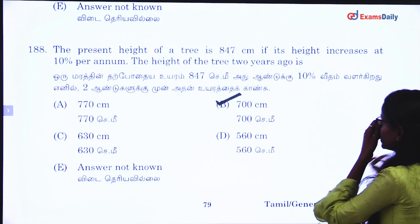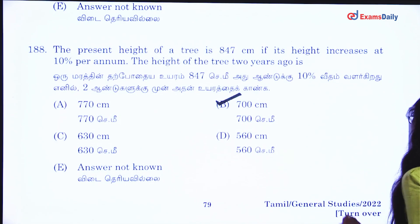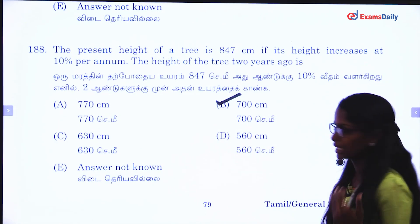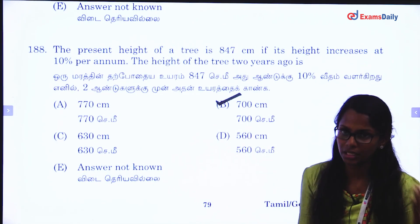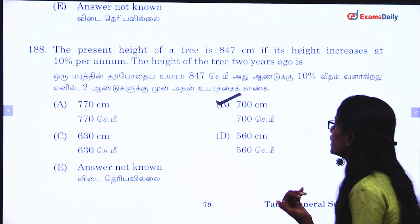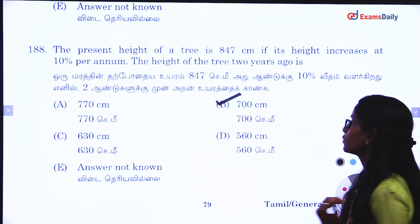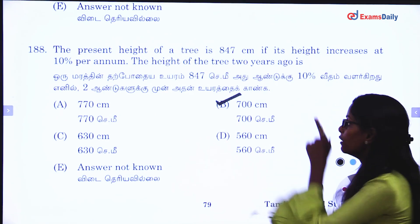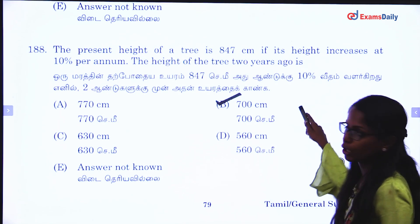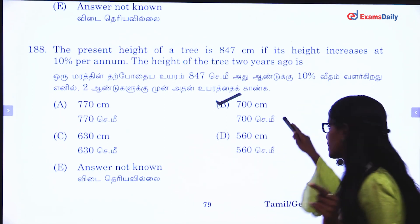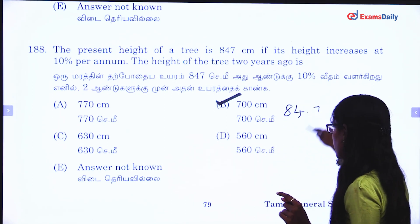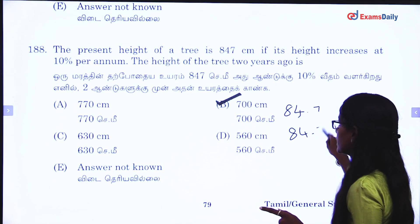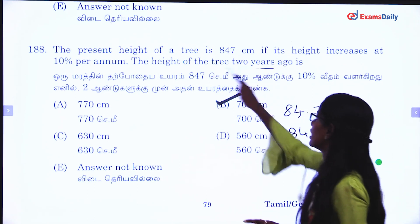Next question. The present height of a tree is 847. Its height increases at 10% per annum. Find the height after 2 years. So 10% of 847 is 84.7. At that time, calculating for 2 years forward.